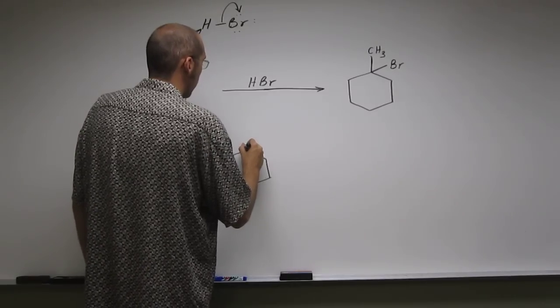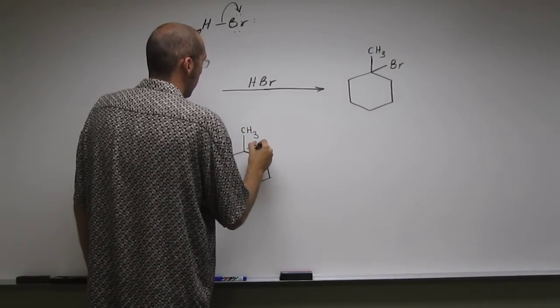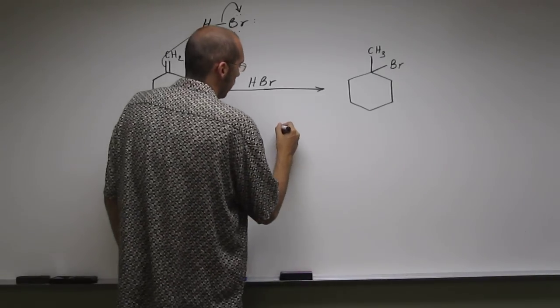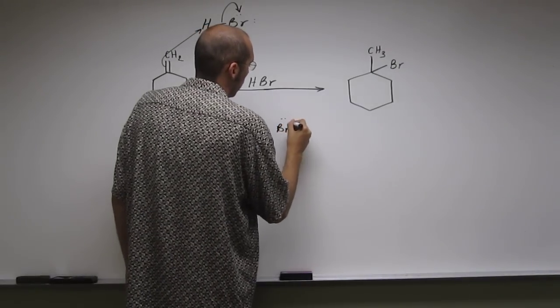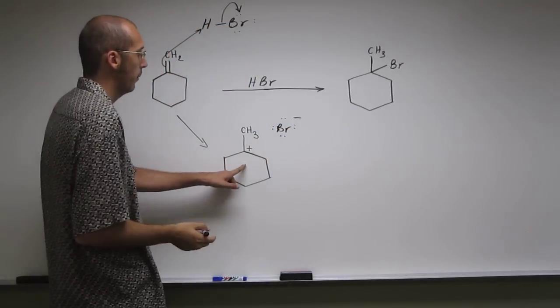So now we've got CH3 and the carbocation. So methyl group and the carbocation and Br with its full octet of electrons, so it's minus. So remember, we could have had the other carbocation.